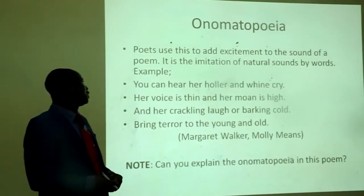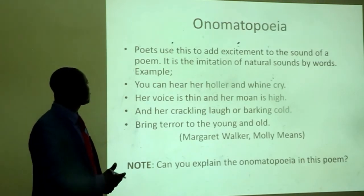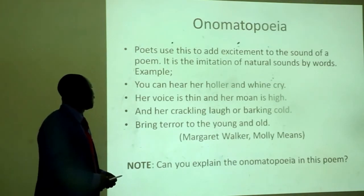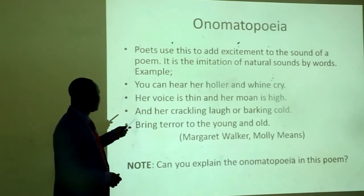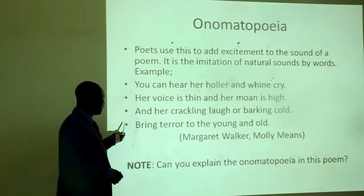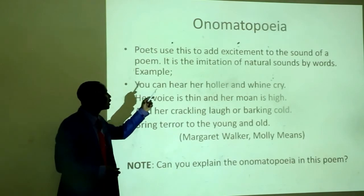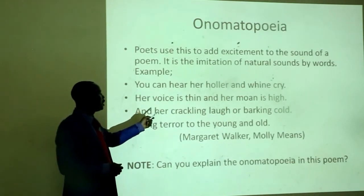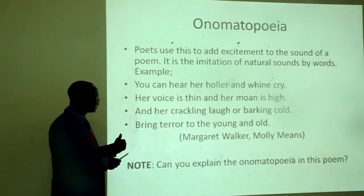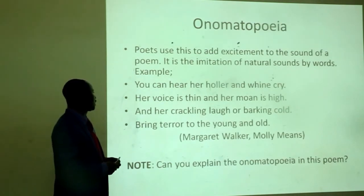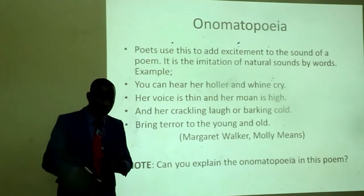Let us look at onomatopoeia. Poets use this to add excitement to the sound of the poem. It is the imitation of natural sounds by words. For example: 'You can hear her holler and whine and cry, her voice is thin and her moan is heard, and her crackling laugh, all back in cold, bring terror to the young and old.' Look at how words are used to reflect the resemblance between words and the senses they represent.